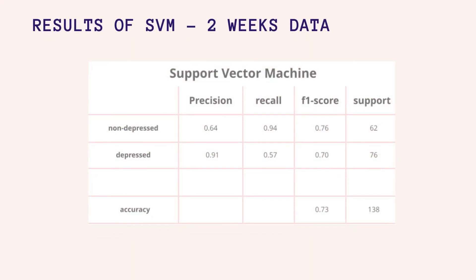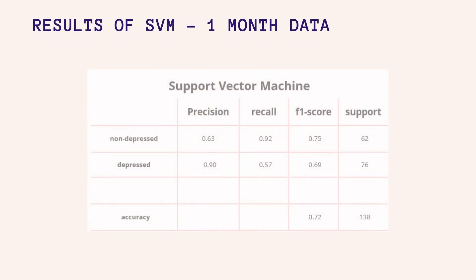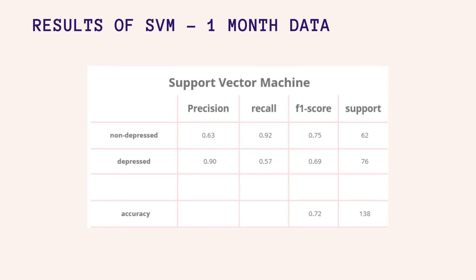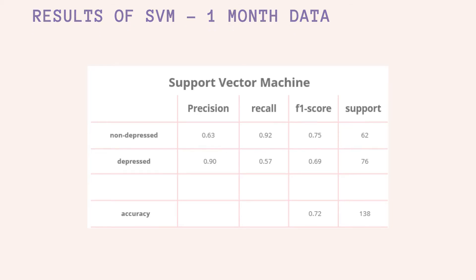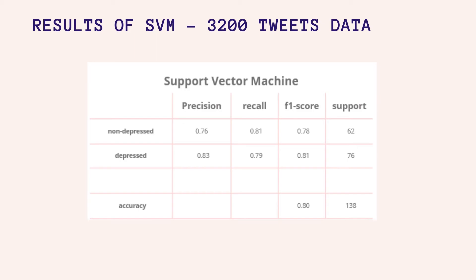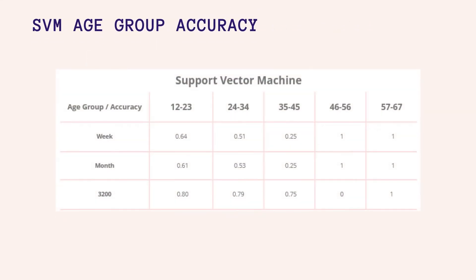This table shows the results of the support vector machine algorithm. SVM produced good values for recall for the non-depressed class and precision for the depressed class; however, other values are quite low. Results for one-month data are more or less similar to the two-weeks result but slightly lower — an unexplained phenomenon, as increasing the data should have produced better results. SVM produced optimal results with the 3,200-tweets dataset, which resulted in the best accuracy across age groups.